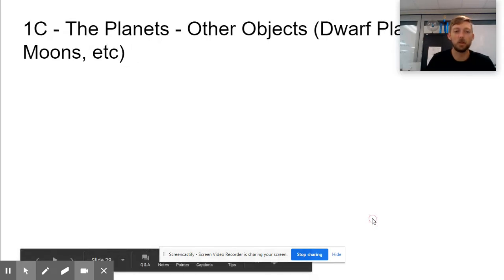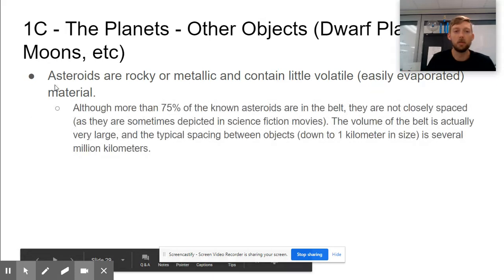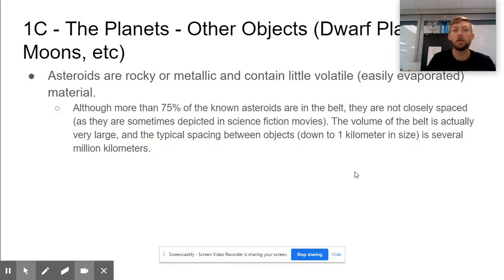Again, asteroids are made of rocky metallic material with very little volatile. Although more than 75% of known asteroids are in the belt, they are not closely spaced as sometimes depicted in science fiction movies. Like in Star Wars when they fly through the asteroid belt—there's probably a lot more space between them. You might not even see any or know you're going through the belt because space is massive.